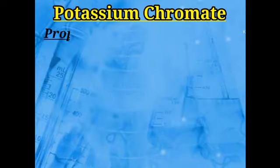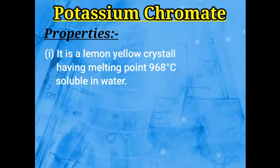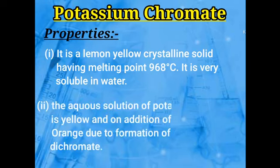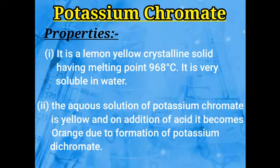Now we see the properties of potassium chromate. First, its physical property: potassium chromate is a lemon yellow colored crystalline solid with a melting point of 968 degree Celsius. This compound is very highly soluble in water.